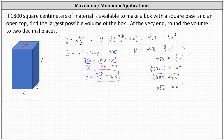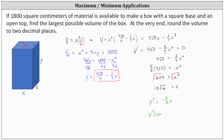We should verify this critical number produces a maximum volume, not a minimum, by making sure the volume function is concave down at this critical number. Finding the second derivative: V double prime equals the derivative of 450 minus three-fourths x squared, which is negative three-halves x. Since the x value is positive, V double prime of 10 root 6 is negative, indicating the function is concave down, confirming we found the x value that maximizes the volume.